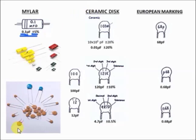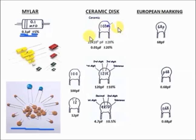For the ceramic disc capacitor — it looks similar in color to the tantalum but is circular in shape, while the tantalum is teardrop or oblong shaped. When reading a ceramic disc, it is always in picofarad. You copy the first and second digits, and the third digit becomes the exponent of base 10, or the number of zeros to add to your reading.